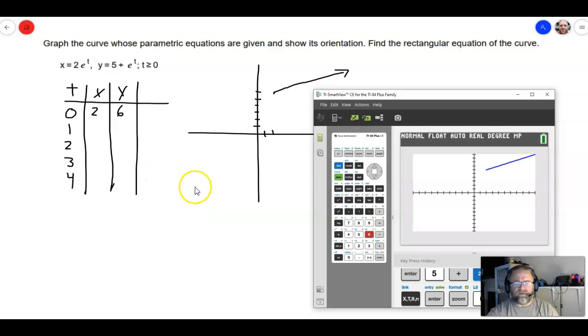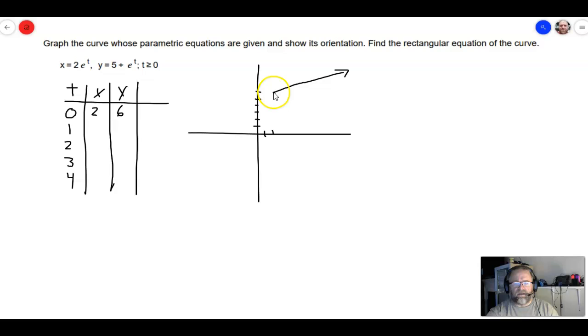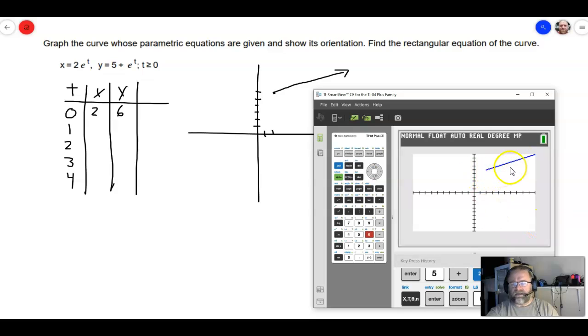Parametric equations also are going to have a direction. And since t is the smallest value it could be at t equals 0, that means this point (2, 6) is where we're going to start, and we're going to go in that direction. As t gets bigger, our x and y's are also getting bigger, and it's going this way. And it looks pretty linear to me as well. It looks like a straight line. So that kind of tells me which graph to use when I go to my math lab here.